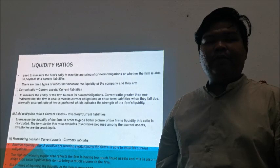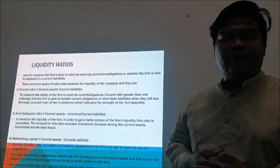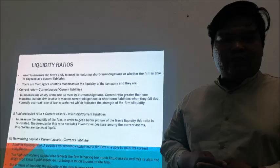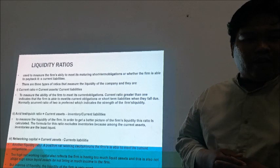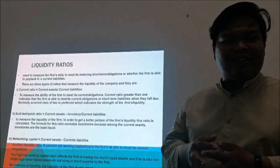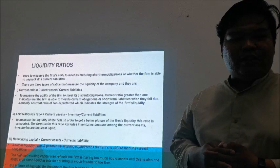We start with liquidity ratios. Liquidity ratios are used to measure the firm's ability to meet its short-term obligations, or whether the firm is able to meet its current liabilities. There are 3 types of ratios that measure the liquidity of a company: current ratio, acid test or quick ratio, and net working capital.